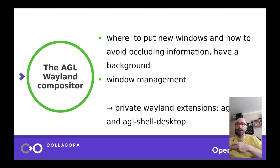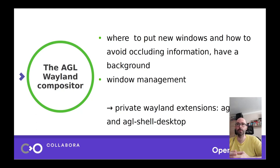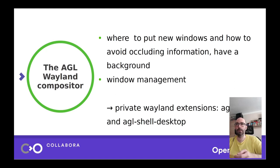In infotainment and IVI systems we don't interact with the environment the way that we interact with desktop environments. So how do we convey to the compositor how we'd like our information to be displayed? Furthermore, how do we tell the compositor which application to be displayed at a certain time? For that we basically use a private extension which is a Wayland protocol extension custom to the AGL compositor.